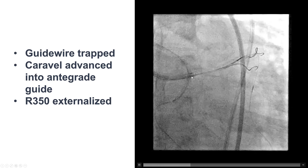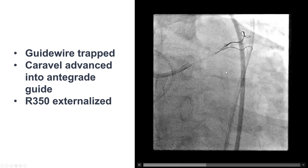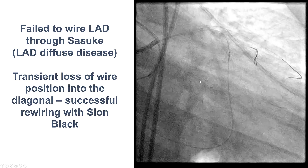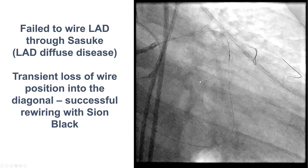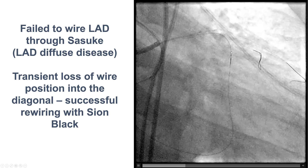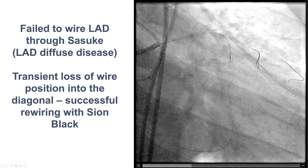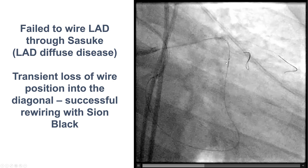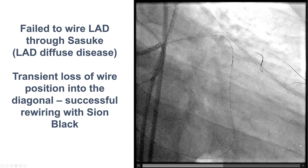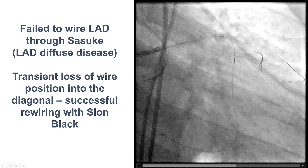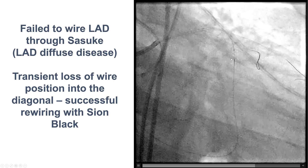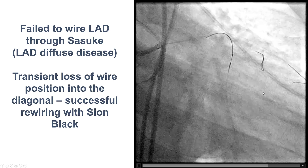We then externalized an R350 guidewire after inserting the microcatheter into the guide catheter, and then tried to wire into the LAD using a dual-lumen microcatheter. Since we were in a septal, we wanted to advance a guidewire into the distal LAD, but despite multiple attempts we were unable to do so, likely because of diffuse disease in the left anterior descending artery.